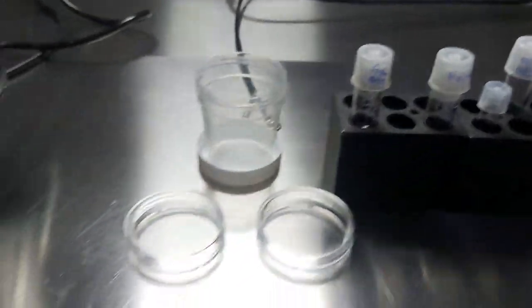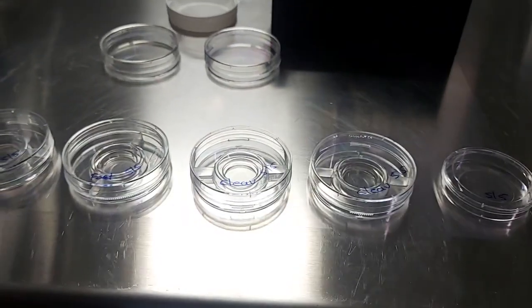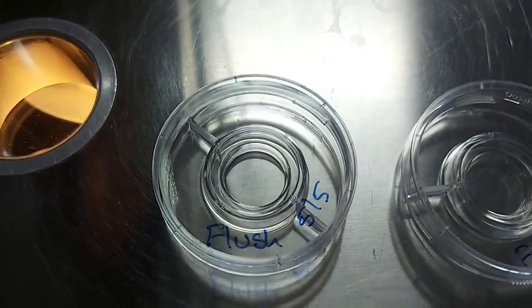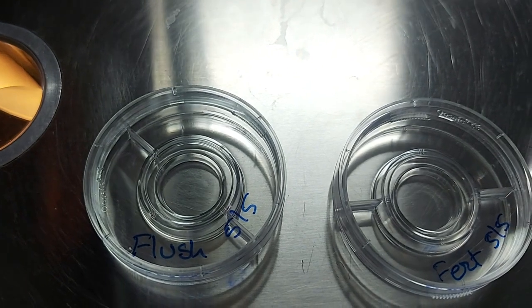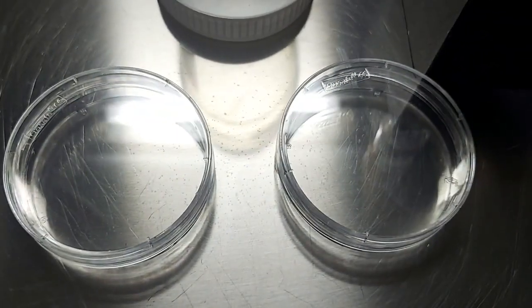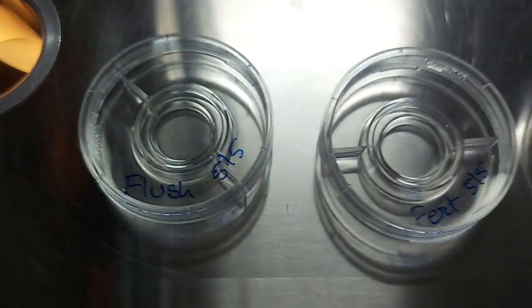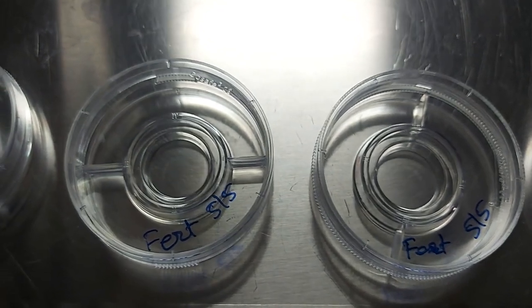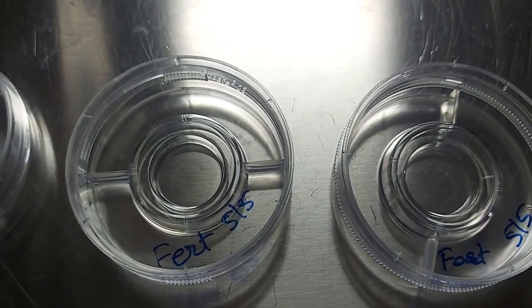And now we are starting preparation. So, this is flush plate in which we will scan the oocytes. This plain plate we will scan the oocytes and keep it in the flush media in this plate. And then after finishing the pickup, we will wash and keep the oocytes in the third plate.